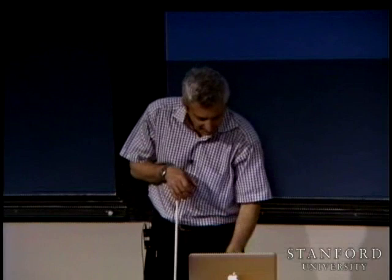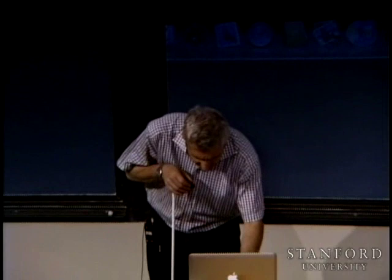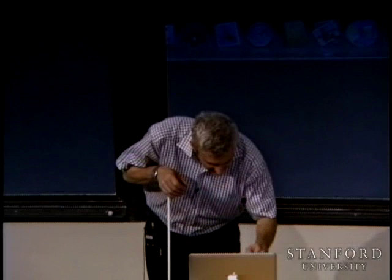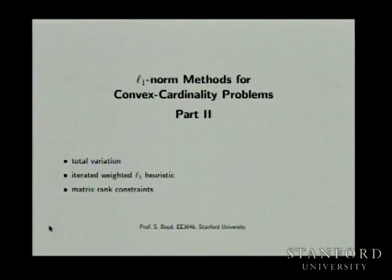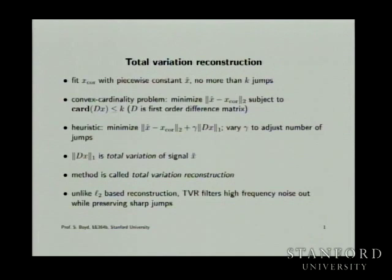Now we'll look at total variation reconstruction — this predates the current L1 fad. Statisticians have been doing it for 12-15 years, geologists for about 20. The recent surge was spurred by the compressed sensing results of the last five years or so. Total variation goes back to the early 1990s. The idea: you have a corrupted signal and want to fit it with a piecewise constant signal with no more than k jumps.